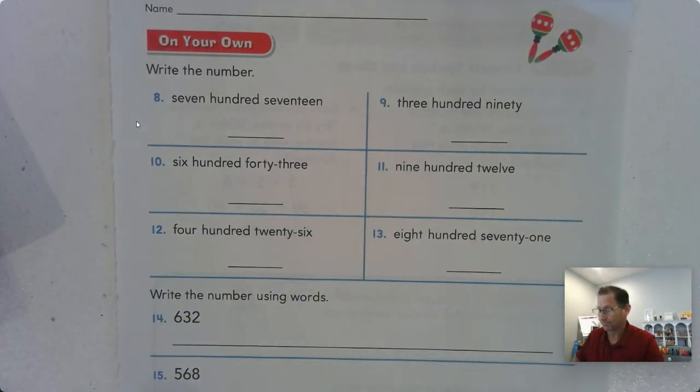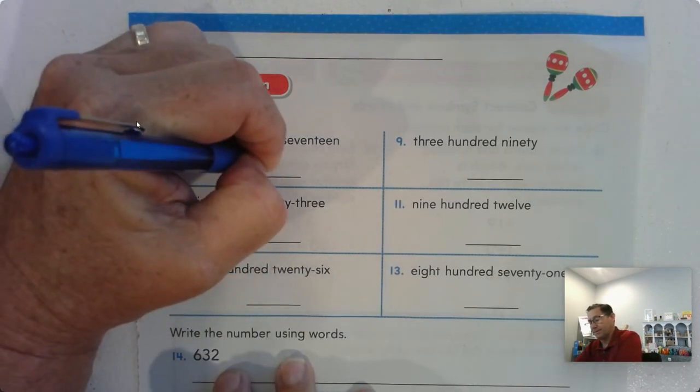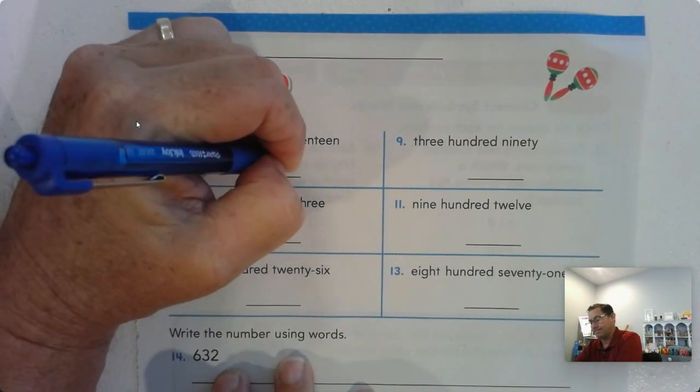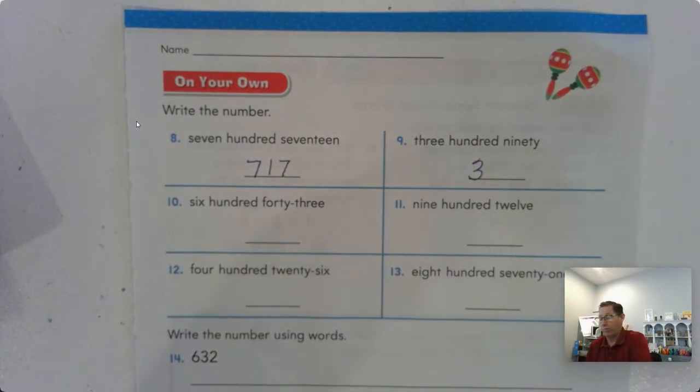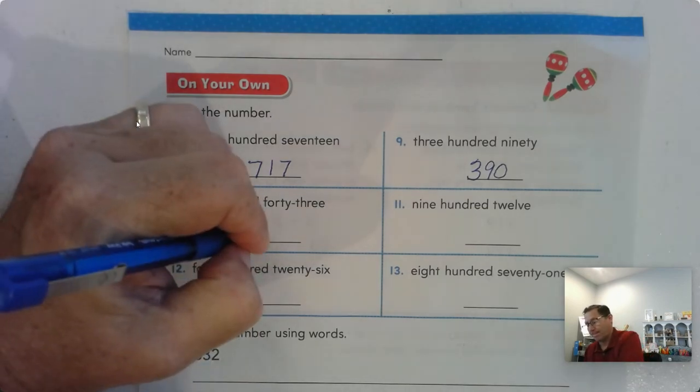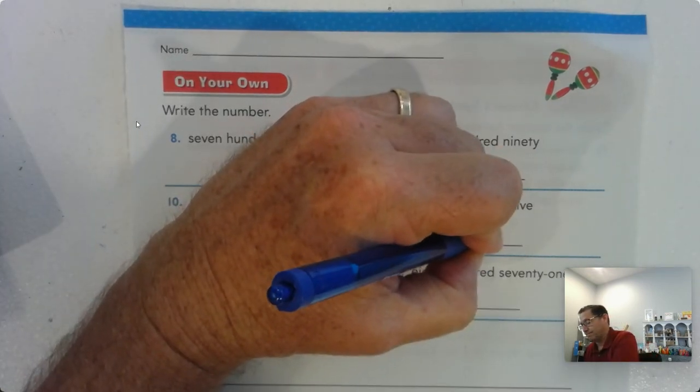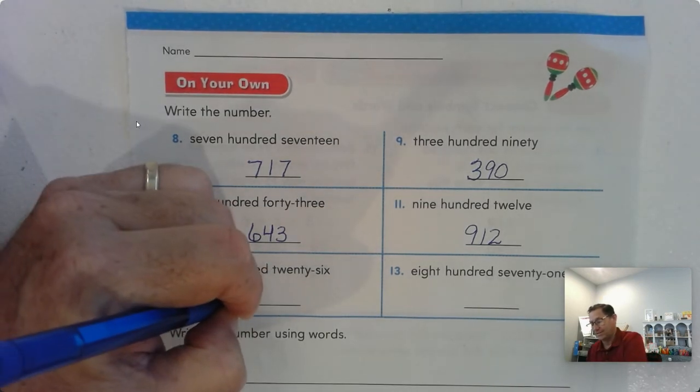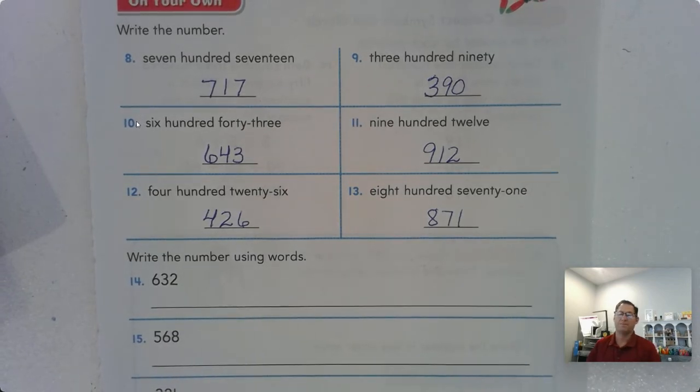Let's look at page 79. Write the number. 717. 390. 300, and how do we write 90? 643. 912. 426. 871. Not very difficult.